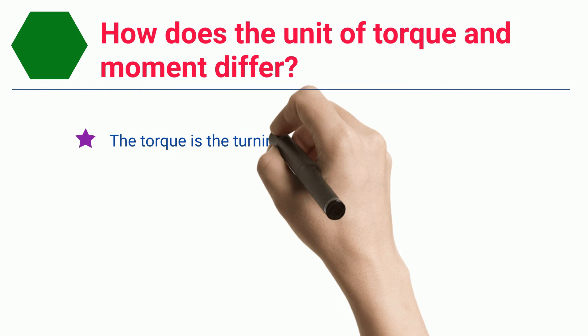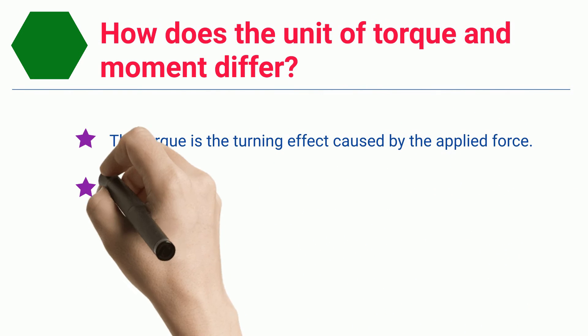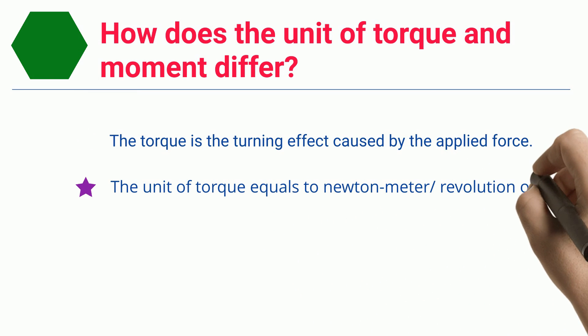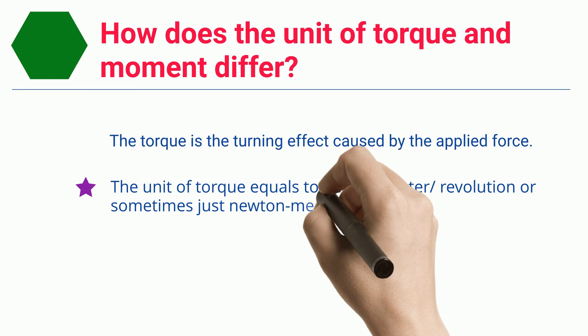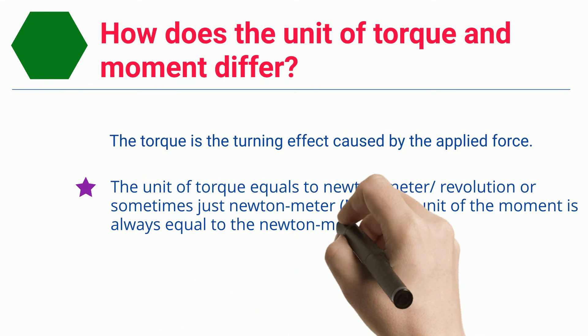How does the unit of torque and moment differ? The torque is the turning effect caused by the applied force. The unit of torque equals to newton meter per revolution, or sometimes just newton meter (Nm). The unit of the moment is always equal to the newton meter (Nm).